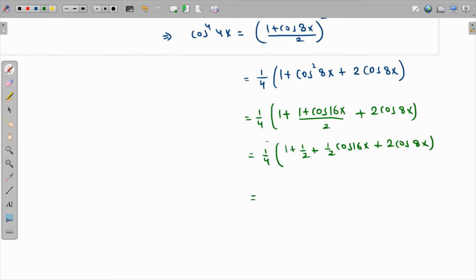Simplifying, 1 + 1/2 is 3/2, and 3/2 times 1/4 is 3/8. 1/4 times 1/2 is 1/8 cos 16x, and 2 times 1/4 is 1/2 cos 8x. So the final answer is 3/8 + (1/8)cos 16x + (1/2)cos 8x.